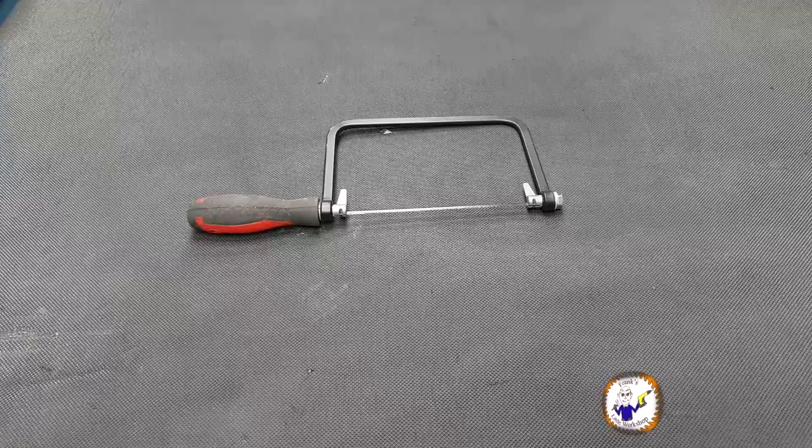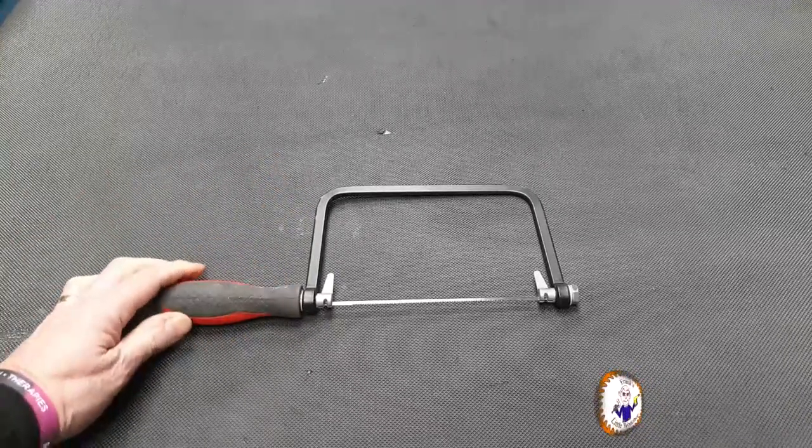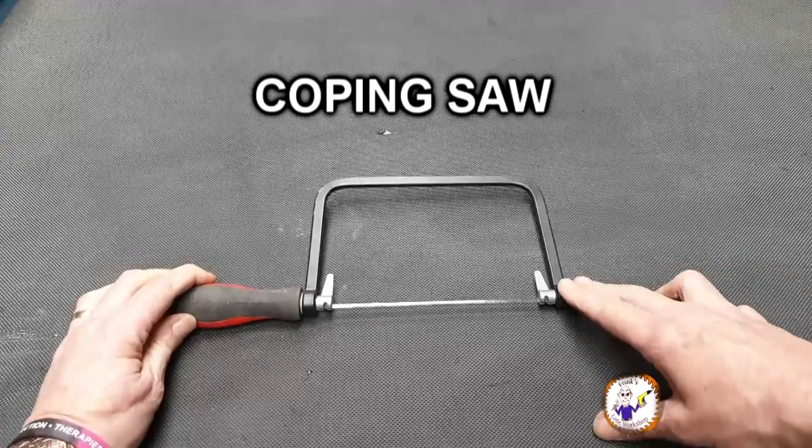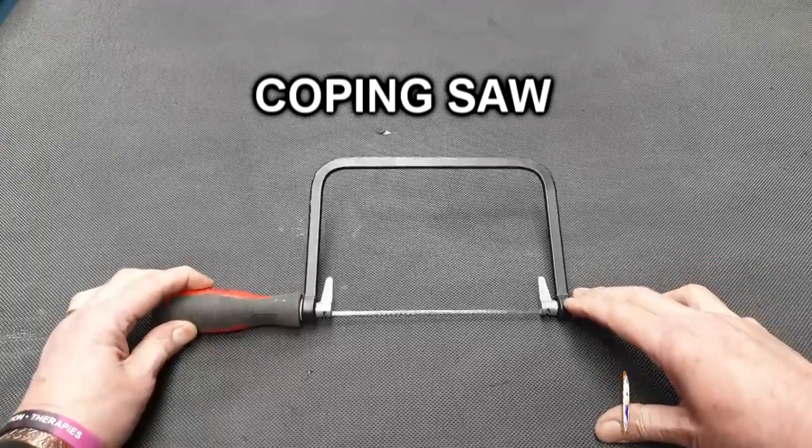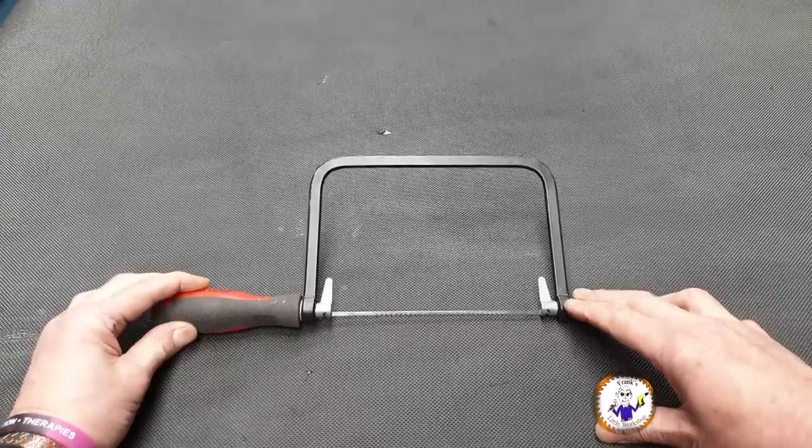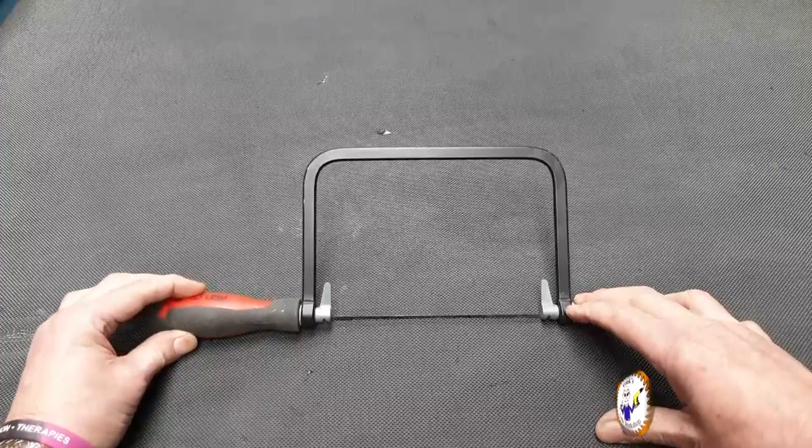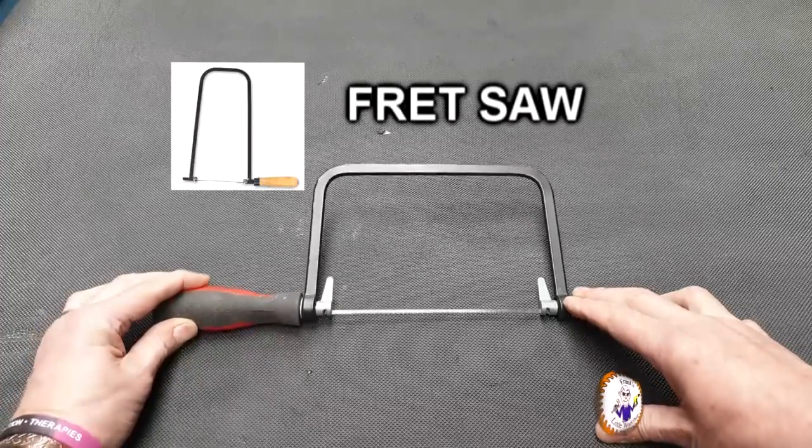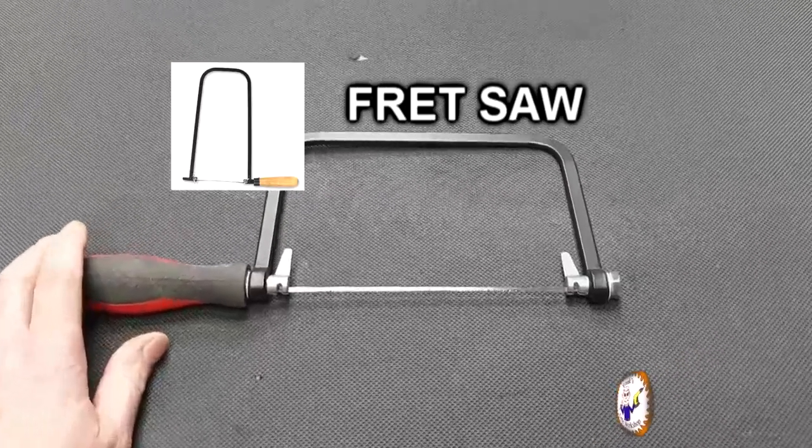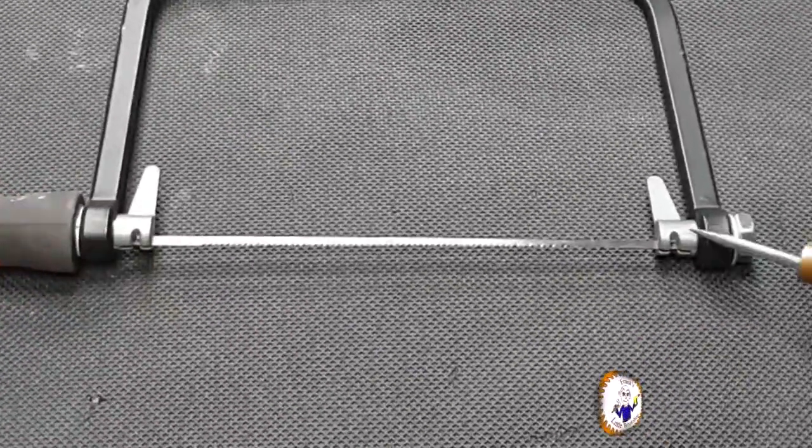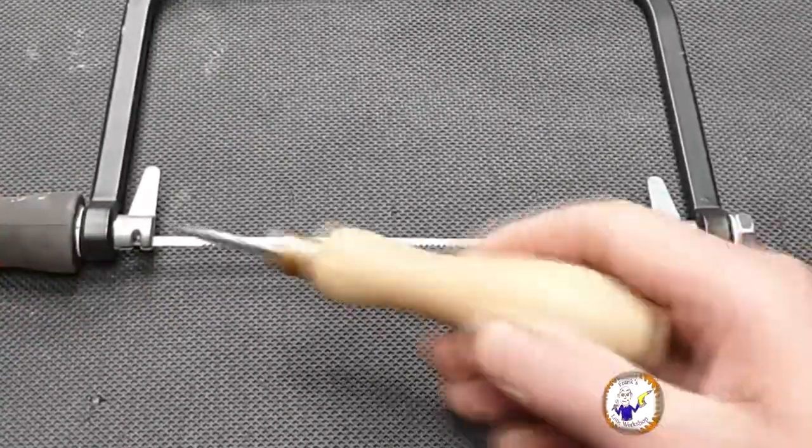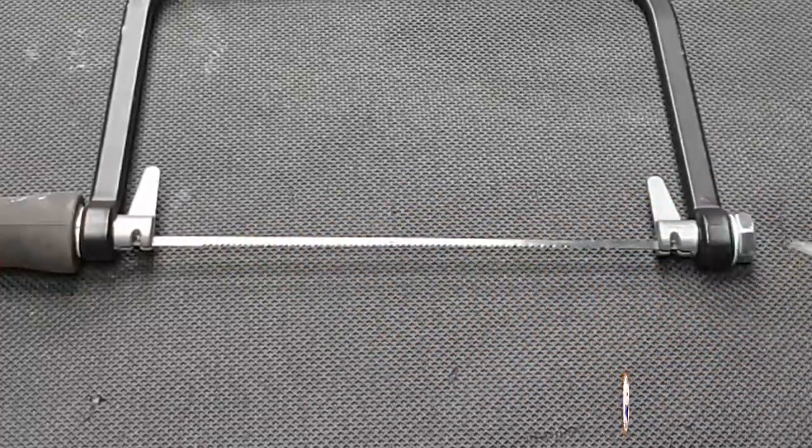You wouldn't use one of these when making dovetails, but you would use one of these. This is a coping saw. Now, to avoid any confusion, you can get another saw that looks very similar but it's actually called a fret saw. The main difference is the way that the blade is actually fixed to the saw.